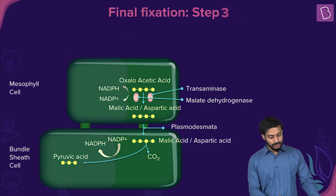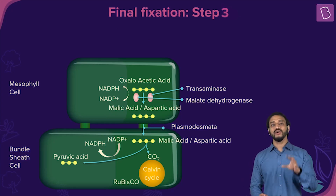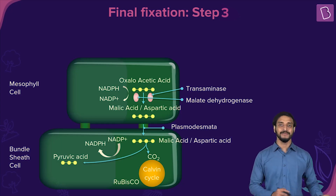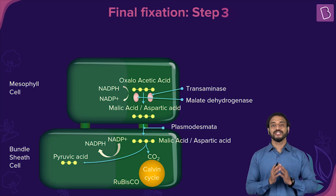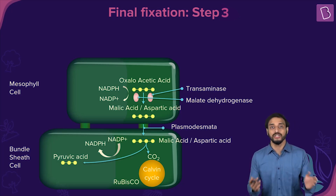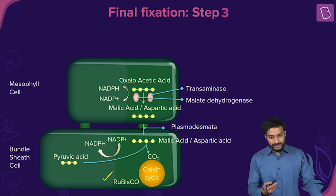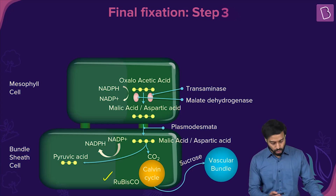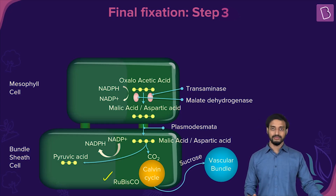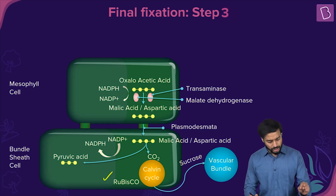The released carbon dioxide enters the Calvin cycle in the bundle sheath cells. RuBisCO is present in the bundle sheath cells — not the mesophyll cells. The bundle sheath cells have thick walls to protect RuBisCO from oxygen, preventing it from acting as an oxygenase. The carbon dioxide fixed by RuBisCO leads to formation of sucrose, which is transported through the vascular bundle.